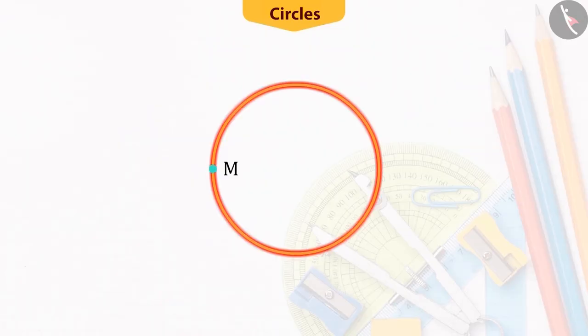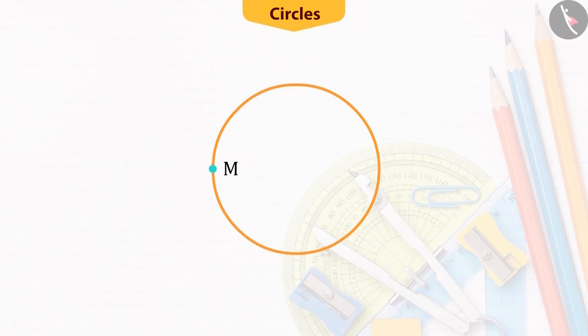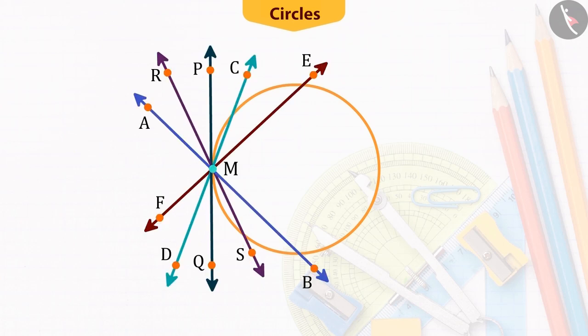Can you draw any other line on this circle passing through the point M? Let's give it a try. From the point M, let's draw some lines on the circle. You can see that all the lines intersect the circle at a point other than point M. So, all these lines are the secant lines of the circle.